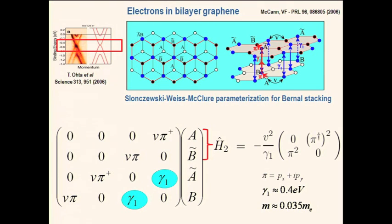For energies close to the neutrality condition, we simplify the description to just two bands, described by a 2x2 Hamiltonian that is now quadratic. It is similar to the monolayer Hamiltonian in structure, except that the off-diagonal parts describing the coupling of the two relevant sublattices now contain pi-dagger squared and pi-squared operators — obtained after eliminating the high-energy part of the Hamiltonian by the Schrieffer-Wolf transformation. This gives a parabolic dispersion characterized by an effective mass about half that of electrons in gallium arsenide.